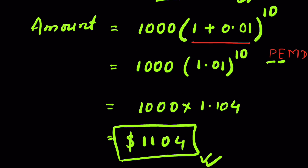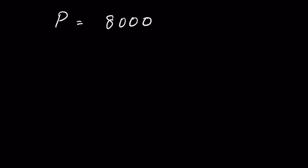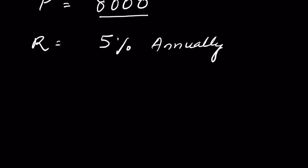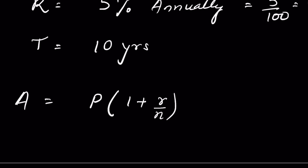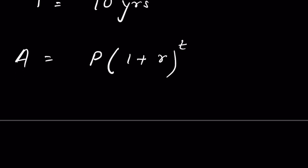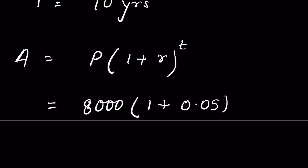Now for Alex's problem: he invested $8,000, so that is our principal. The rate of interest is 5% annually, which is 0.05 in decimal form, and the time is 10 years. Applying the formula: A = 8000 × (1 + 0.05)^10, since it is compounded annually so N = 1.